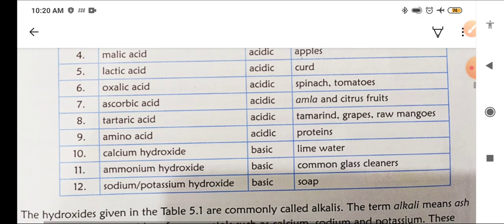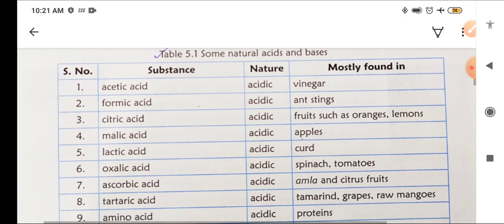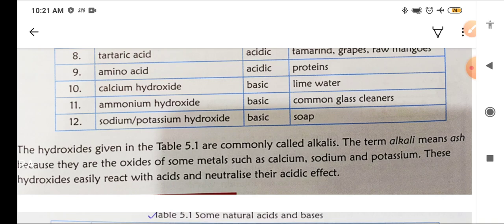Tartaric acid is found in tamarind, grapes, and raw mangoes. Amino acids are acidic in nature and found in proteins. Amino acids are the building blocks of proteins. Calcium hydroxide (Ca(OH)2) is basic in nature, found in lime water. Ammonium hydroxide is basic, found in common glass cleaners. Sodium or potassium hydroxide is basic in nature, found in soap.